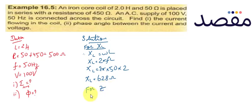Now we have to know Z for impedance. Z equals square root of XL squared plus R squared. So Z equals square root of 628 squared plus 500 squared. Z will become 803 ohms.